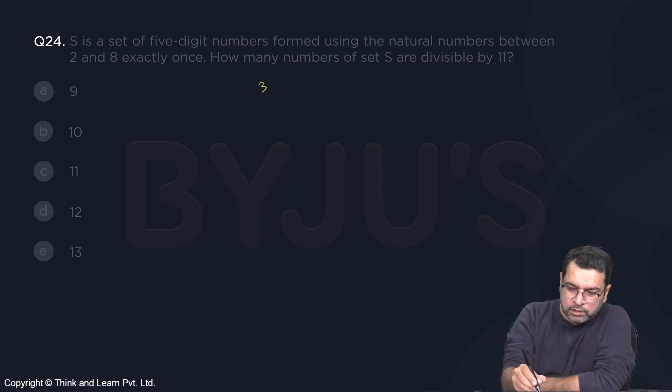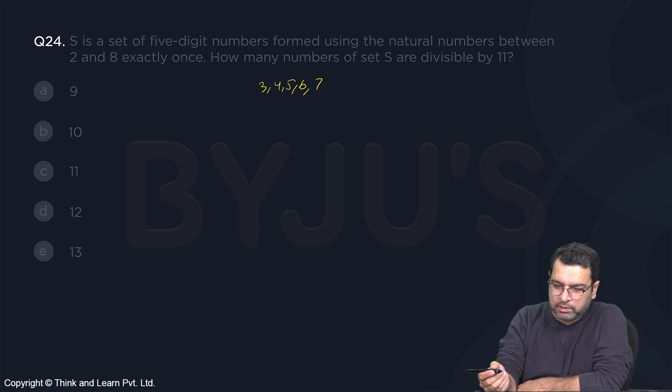Between 2 and 8, we have 3, 4, 5, 6, 7. There are five numbers and you need to make five-digit numbers.